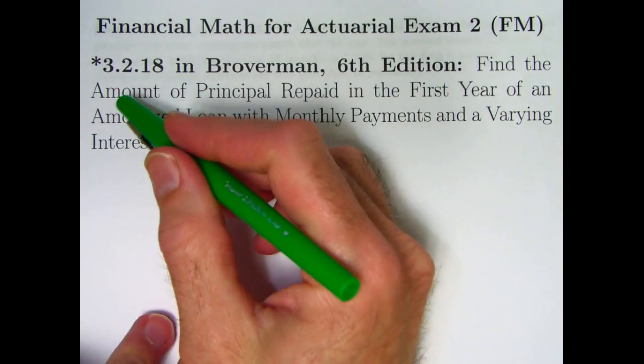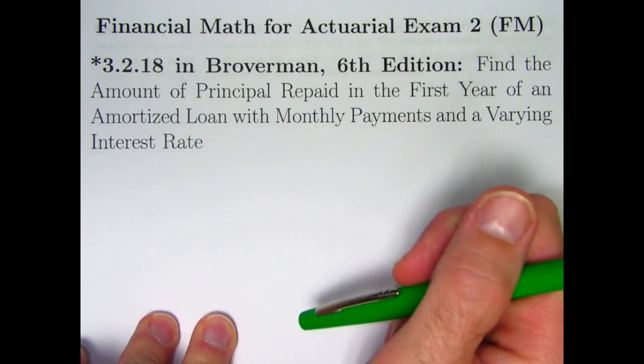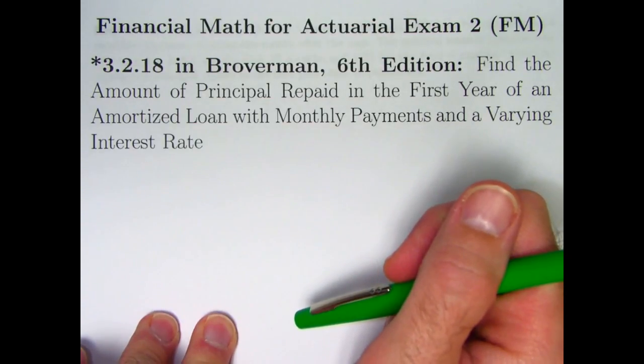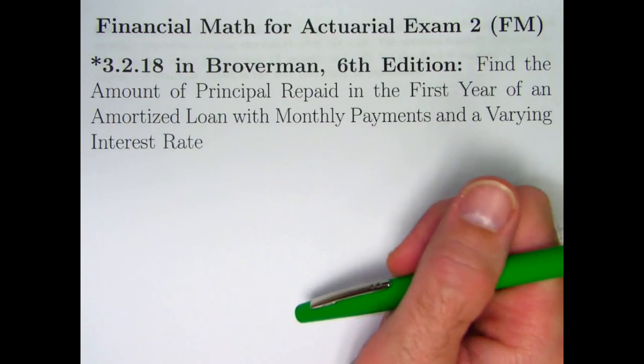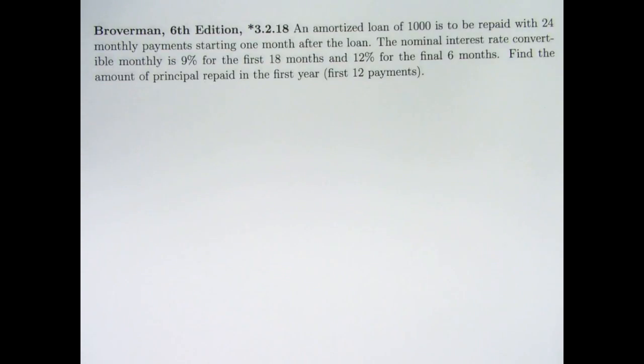This is a video about solving starred problem 3.2.18, finding the amount of principal that is repaid in the first year of an amortized loan that's got monthly payments and a varying interest rate. The interest rate is just going to change once. It is still a discrete problem.